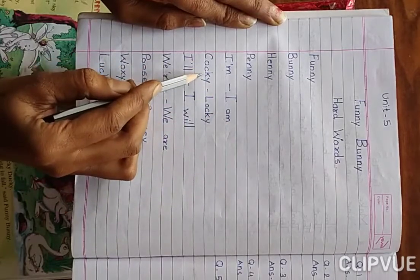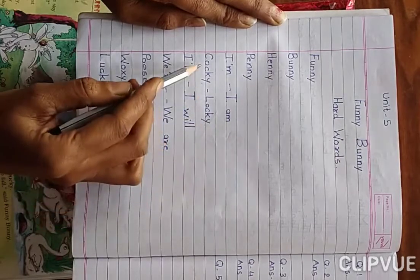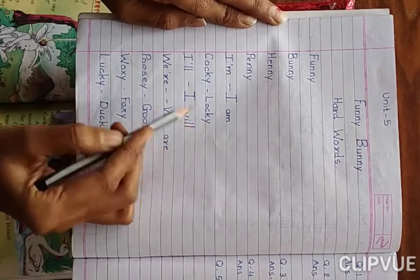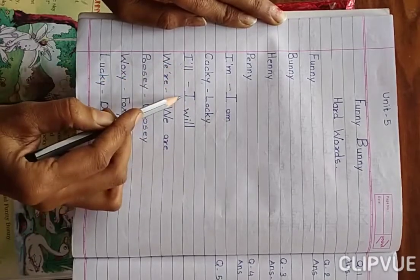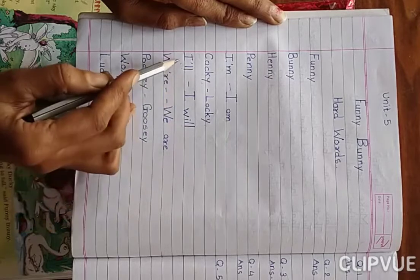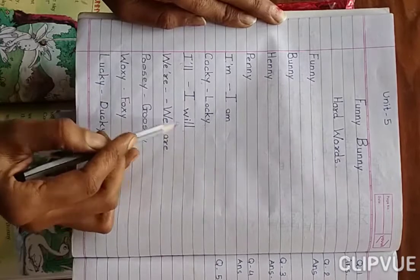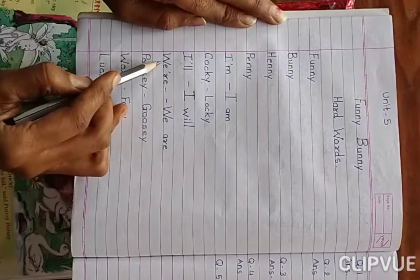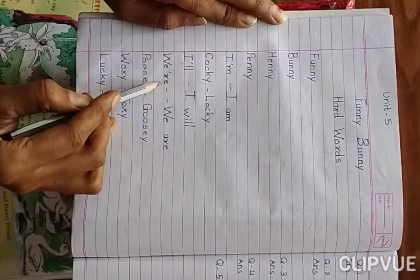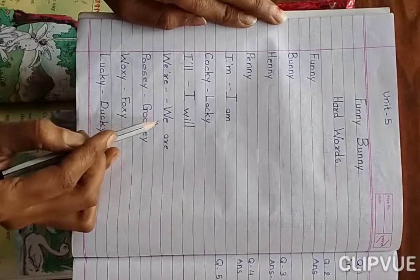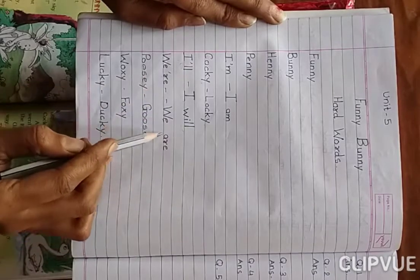C-O-C-K-Y, Cocky. L-O-C-K-Y, Locky. I'll — this is the short form of I will. I'll — I will. We're — we are. This is the short form of we are. We are not — we can write this as we're not.